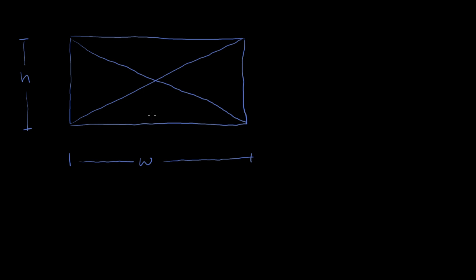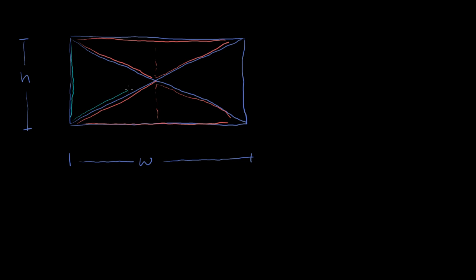Right when you look at it, it might be reasonably obvious that this bottom triangle right here will have the same area as the top, upside-down triangle. These two have the same area — they have the same dimension for their base, this width, and they have the same height, because this distance right here is exactly half of the height of the rectangle. They are symmetric, equal triangles. It's probably equally obvious that the triangle on the left has the same area as the triangle on the right. What is not obvious is that these orange triangles have the same area as these green-blue triangles, and that's what we're going to show right here.